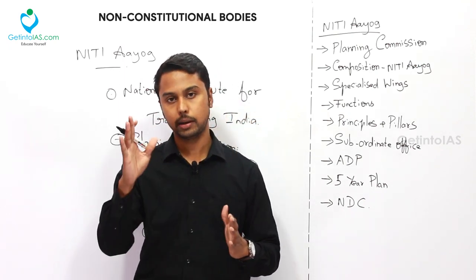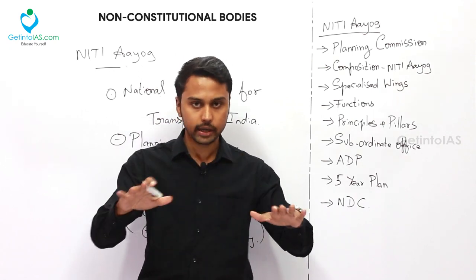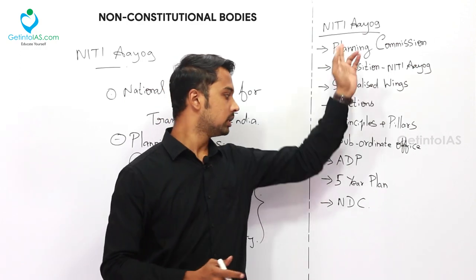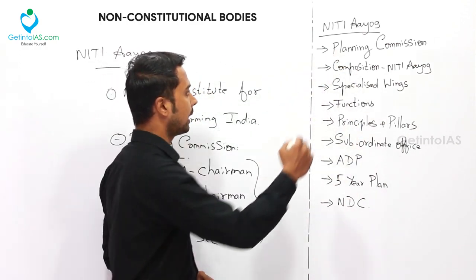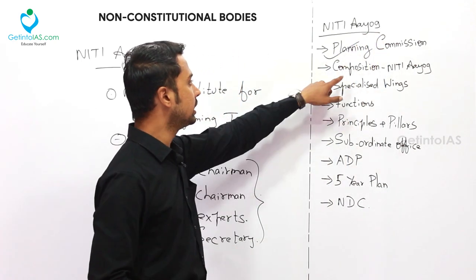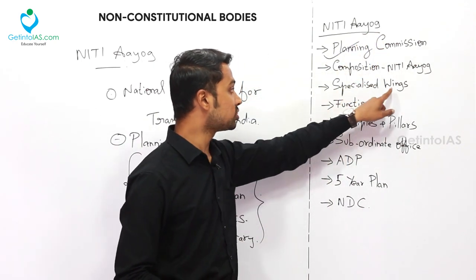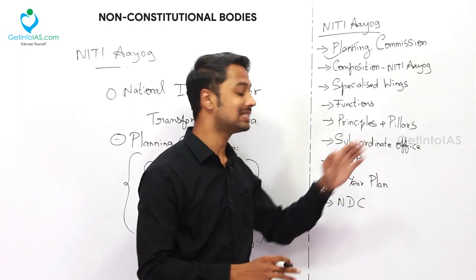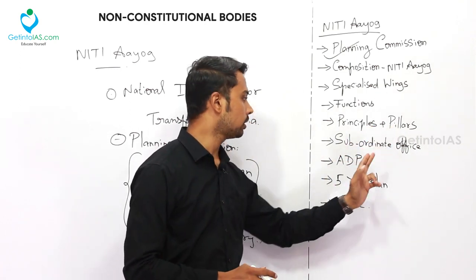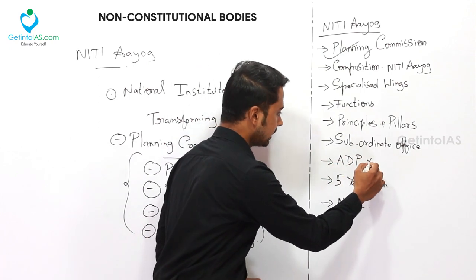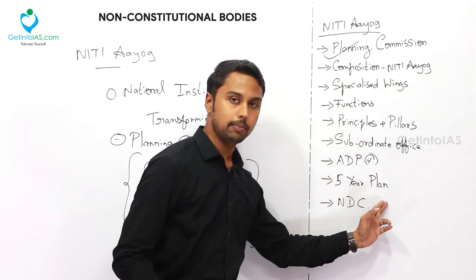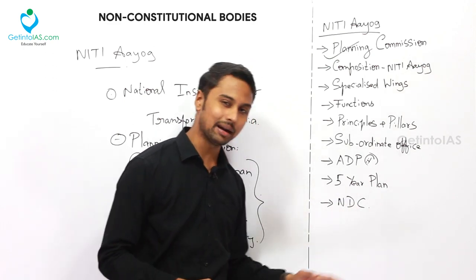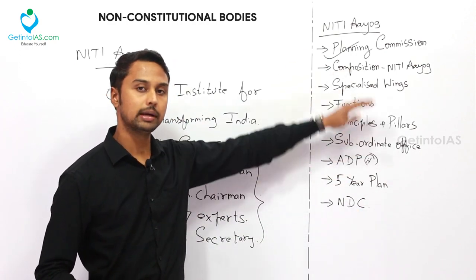The Planning Commission has been scrapped and is no longer in existence. It has been replaced by NITI Aayog. Now we will study about NITI Aayog. Here is the order we will follow: composition of NITI Aayog, then specialized wings, functions, seven principles and seven pillars, subordinate office, the Aspirational District Programme, the current status of the Five-Year Plan, and the National Development Council.